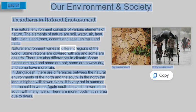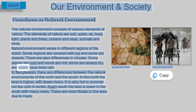The natural environment varies in different regions of the world. Some regions are covered with ice and some are deserts. There are also differences in climate — some places are cold and some are hot, some are always dry and some have more rain.